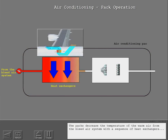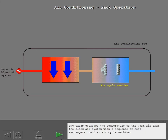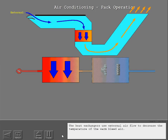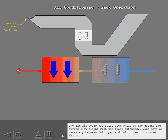The packs decrease the temperature of the warm air from the bleed air system with a sequence of heat exchangers and an air cycle machine. The heat exchangers use external air flow to decrease the temperature of the warm bleed air. The ram air doors control the flow of external air to the heat exchangers. The ram air doors are fully open while on the ground and during slow flight with the flaps extended, and move as necessary between full open and full closed in cruise flight.